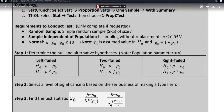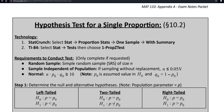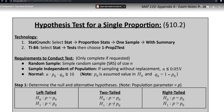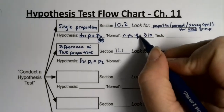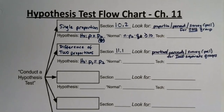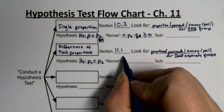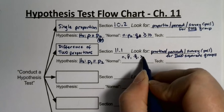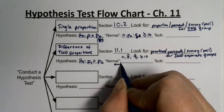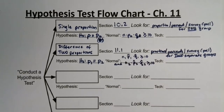To ensure normality for the single proportion test from section 10.2, we need n times P-naught times Q-naught to be greater than or equal to 10. For the two-proportion test, we need both n1 times P1-hat times Q1-hat ≥ 10, and n2 times P2-hat times Q2-hat ≥ 10.